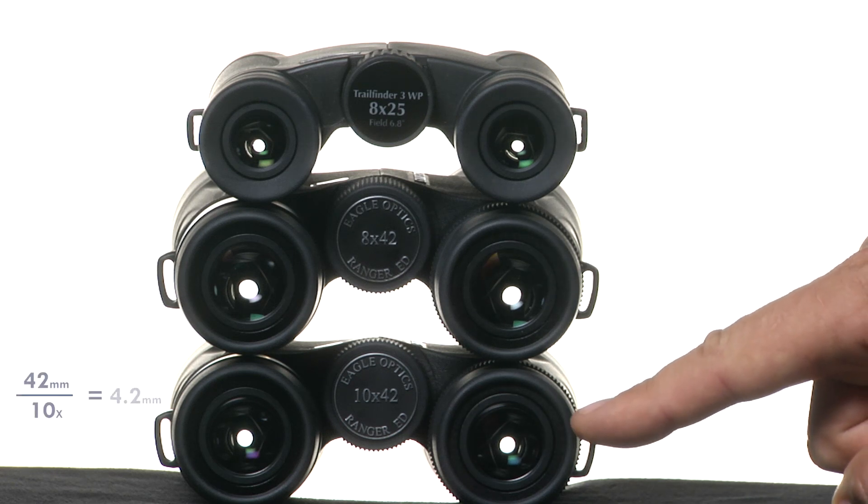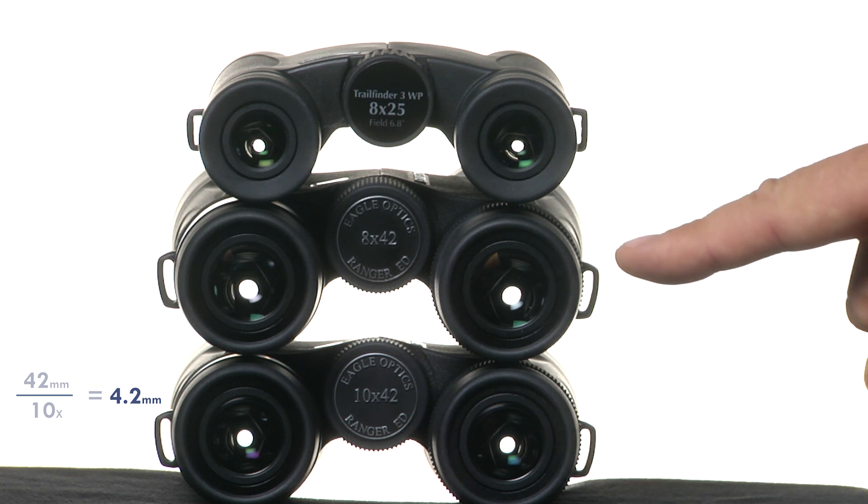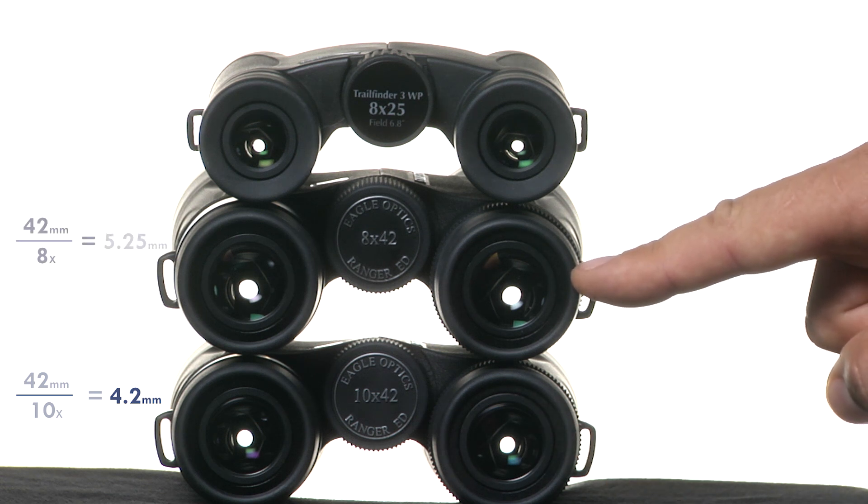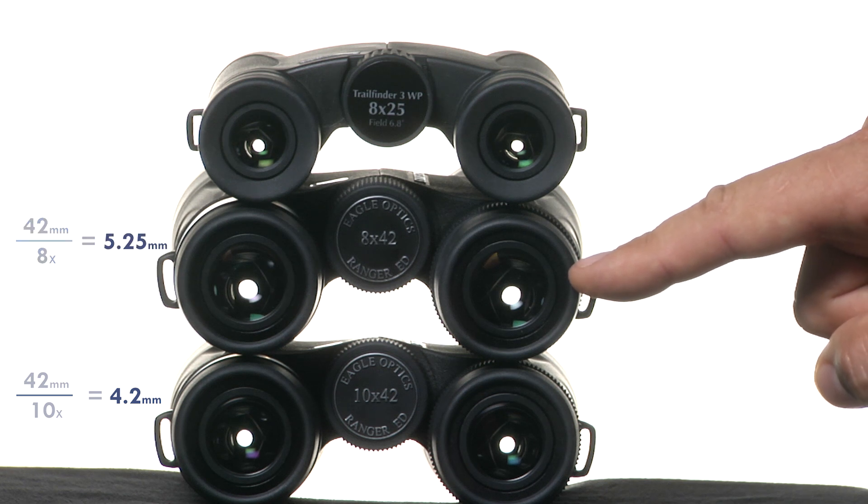So for instance, a 10x42 has about a four millimeter exit pupil. If we decrease the power to an 8x42, you can see the exit pupil gets bigger, about five millimeters.